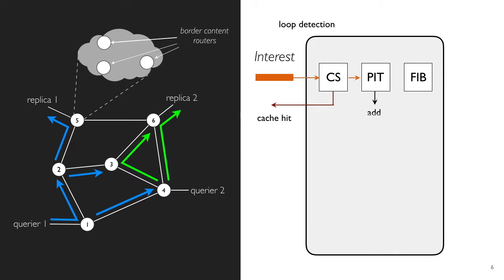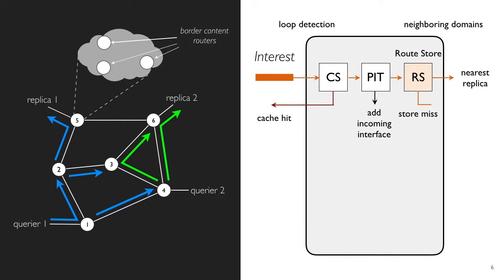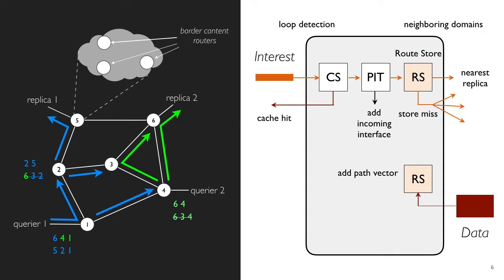When an interest is received by a router, the CS and PIT are used in a similar way as in CCN. The difference lies in the use of a root store where the routes to previously discovered content copies are recorded. If such a route doesn't exist, the interest is propagated to all neighboring domains. Once a copy is discovered, the data message is returned on the reverse path followed by the interest.